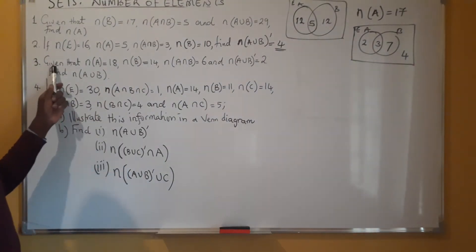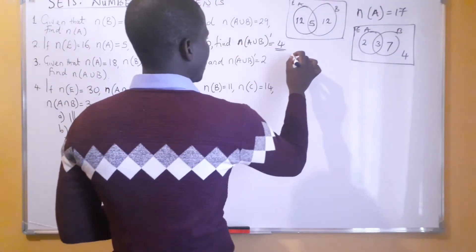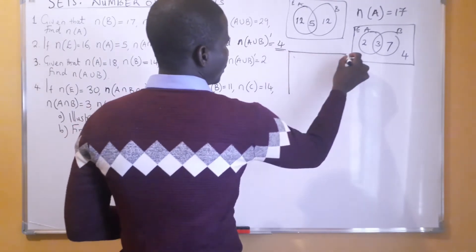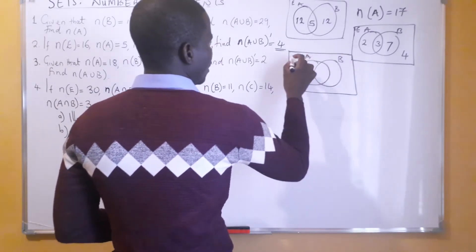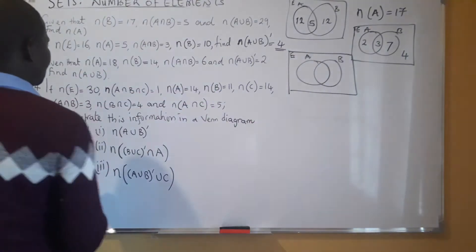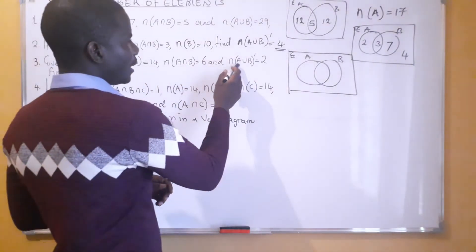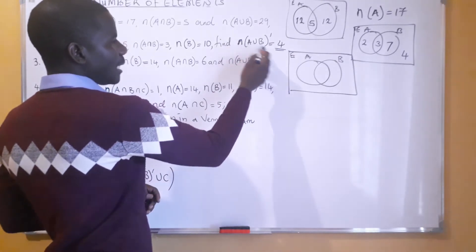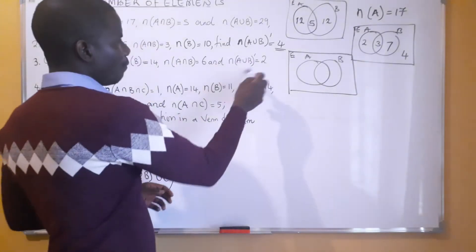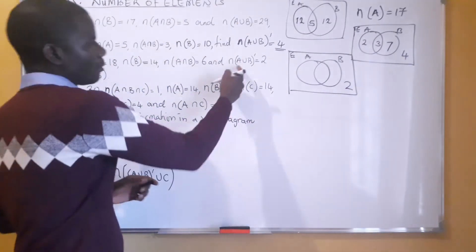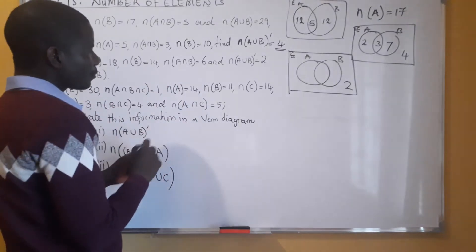Let's look at question 3. Allow me to put the Venn diagram here — A, B, and the universal set. The number of elements in A is 18, in B is 14, in the intersection is 16. Those that are outside the two sets — elements that are not in any of these two sets — it's 2, so the 2 must be outside. The intersection: what do we have? We have 6 here.